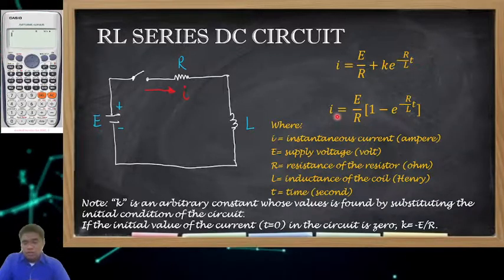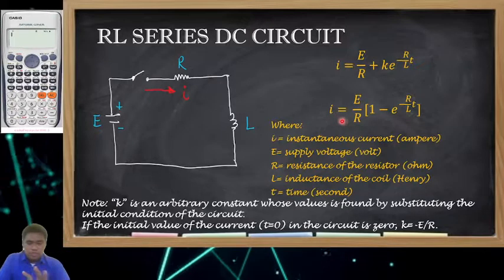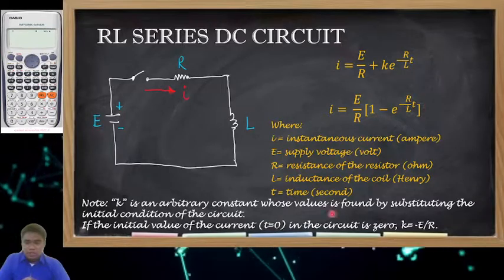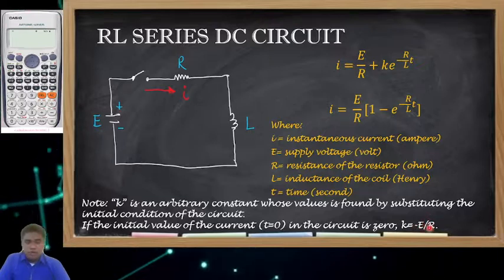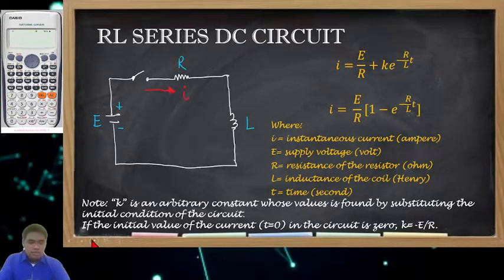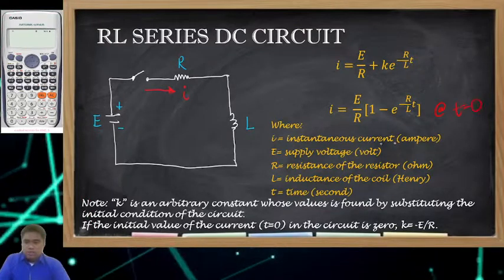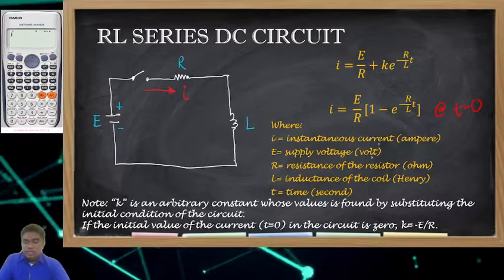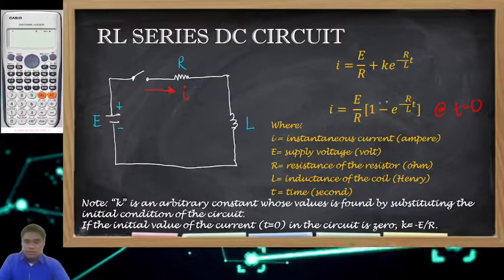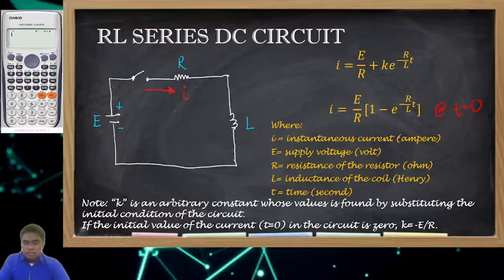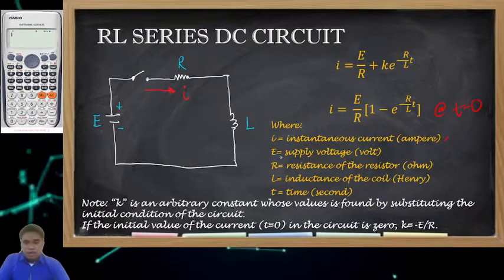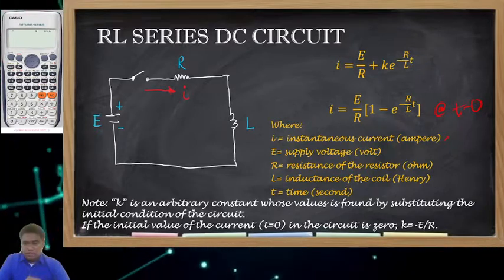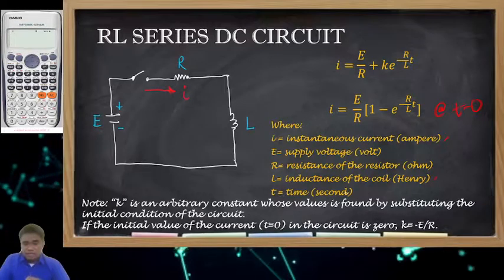If we have the initial value of current at T equals zero, our K will just be equal to negative E over R, so we could have: I equals E over R times (1 minus E to the negative R over L times T). Here, I is the instantaneous current in amperes, E is the supply voltage in volts, R is the resistance of the resistor, L is the inductance of the coil, and T is the time in seconds.